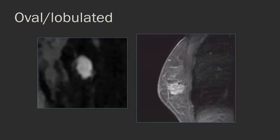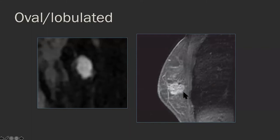Round is straightforward — here's a round mass which was a lymph node. This is an oval and mildly lobulated mass. How lobulated can something be before it becomes irregular? If you have two to three, maybe four gentle lobulations, I'd still call it lobulated. Once it starts getting more than that, move it into irregular. Here are two examples of irregular shaped masses — we're talking about the shape, not the edges.